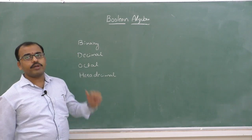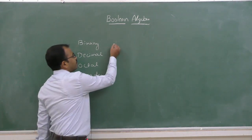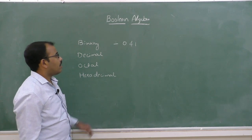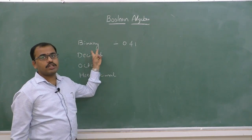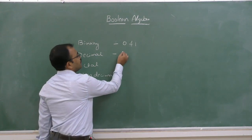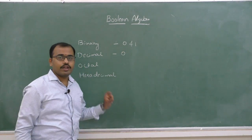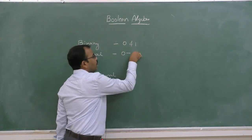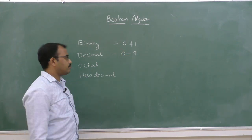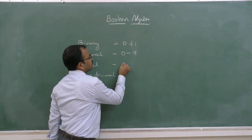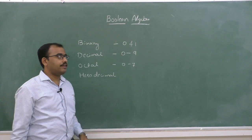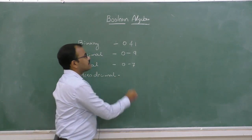In binary number system, the representation of numbers is in 0s and 1s. There are only two numbers that exist in binary number system, that is 0 and 1. The second one is decimal number system. In decimal number system, there exist nine different possible numbers and those numbers are from 0 to 9. In octal number system, we represent eight different numbers between 0 to 7.